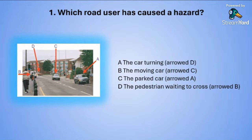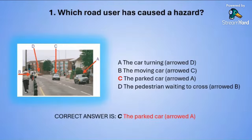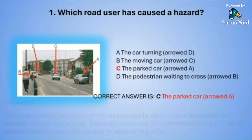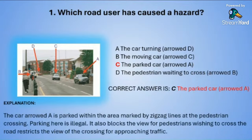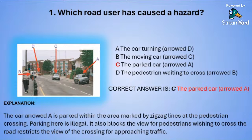The correct answer is C — the parked car with arrow A. The car with arrow A is parked within the area marked by zigzag lines at the pedestrian crossing. Parking here is illegal and it blocks the view for pedestrians who want to cross the road, restricting the view of the crossing for approaching traffic.